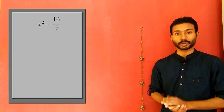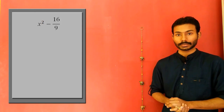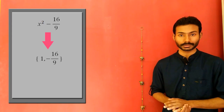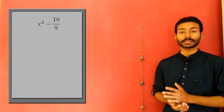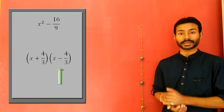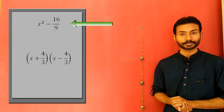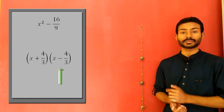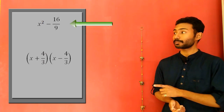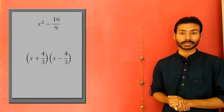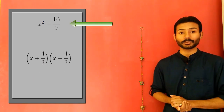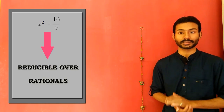Let's now consider this polynomial. The coefficients of this polynomial are 1 and 16/9, which are both rational numbers. This polynomial can be expressed as a product of these two factors. The degrees of both these factors are less than the degree of the given polynomial, and the coefficients of both these factors are rational numbers. So the given polynomial is reducible over the set of all rational numbers.